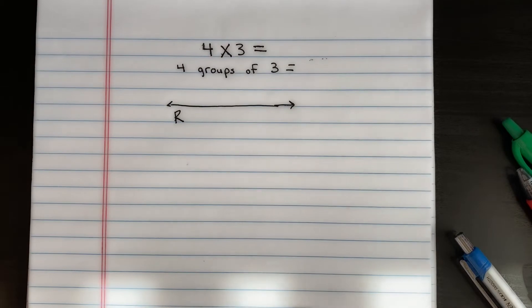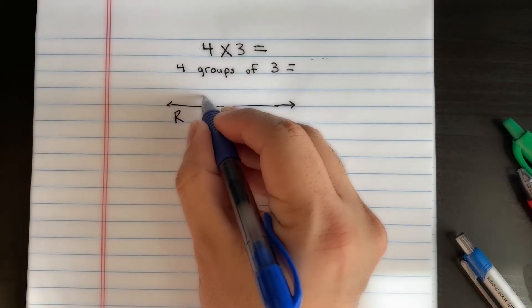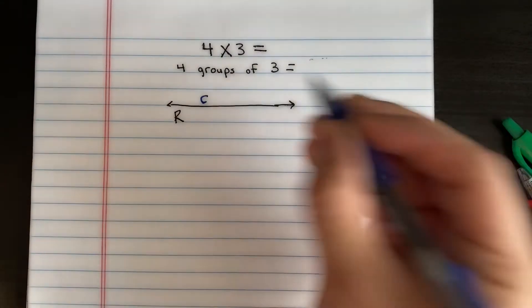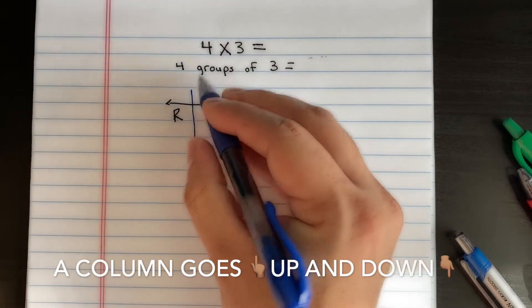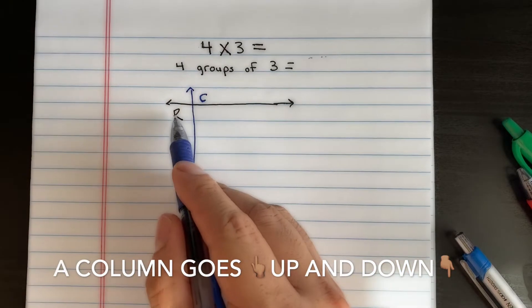A column, I'm going to put a C right here for a column. A column goes up and down. A row goes from left to right. A column goes up and down.